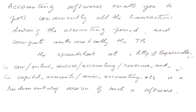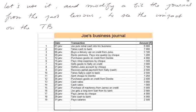The spreadsheet at this address — mini underscore accounting dot xls — is a rudimentary version of such software. We have already used it in the past lessons. Let's use it again and modify the journal from the past lessons a bit to see the impact on the trial balance.